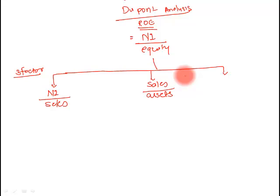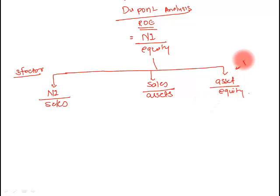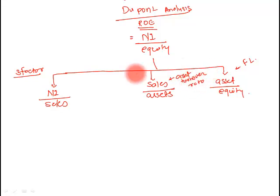Sales divided by assets is called the asset turnover ratio. The third factor is assets divided by equity, which is called the financial leverage ratio. So in summary: net income by sales is net profit margin, sales by assets is asset turnover, and assets by equity is financial leverage — these are the three components of the three-factor DuPont.